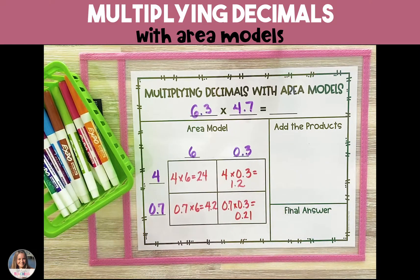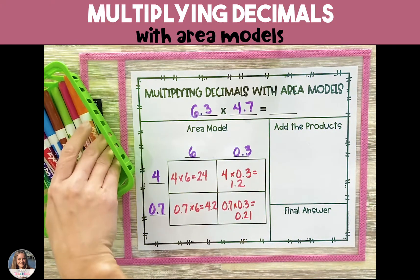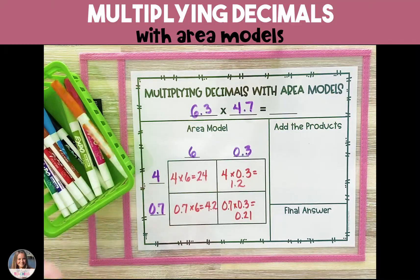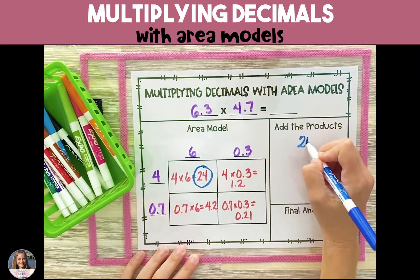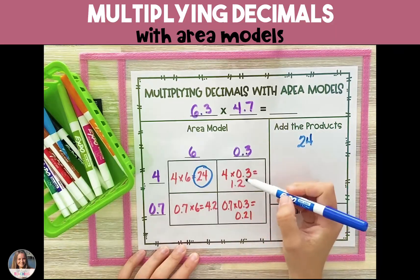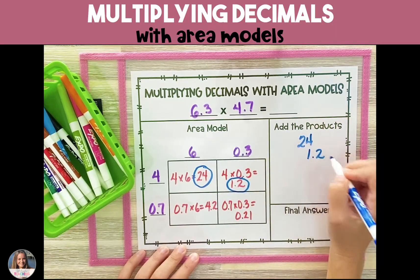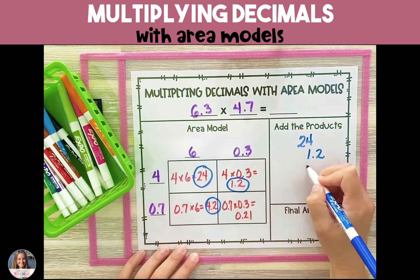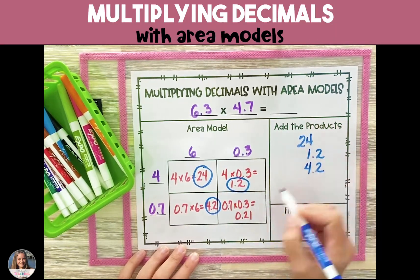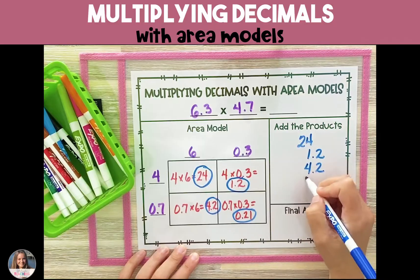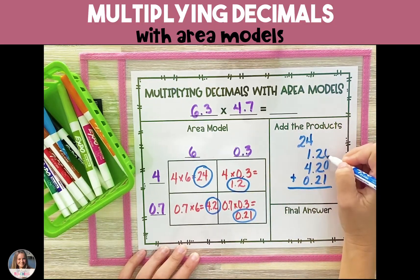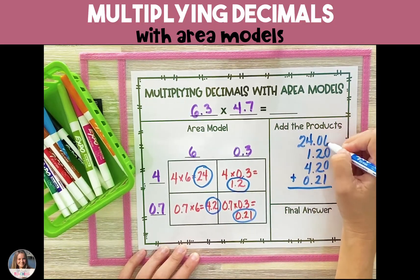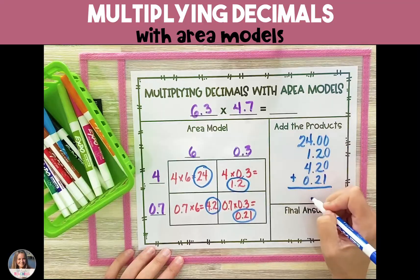Once we have the product of each digit, we are going to add each of the products together. It's important to make sure that we are lining up our numbers by place value, so you may have to add additional digits to your decimal place in order for the digits to line up by the decimal.